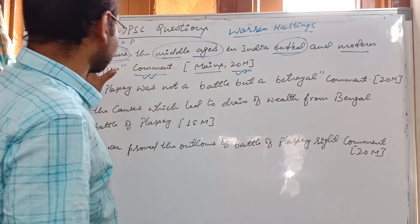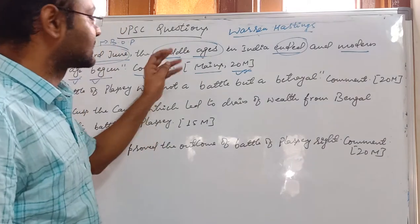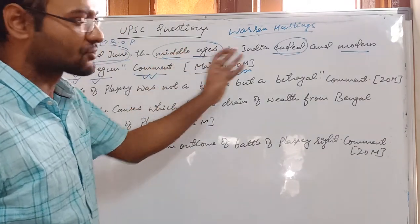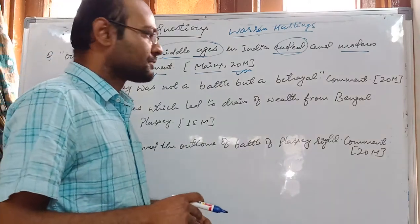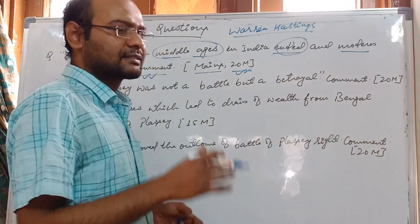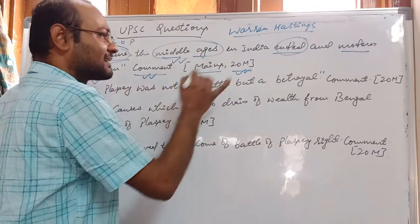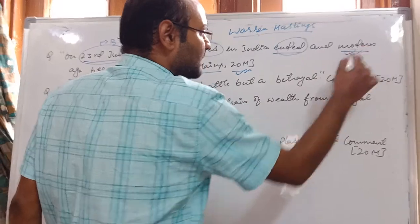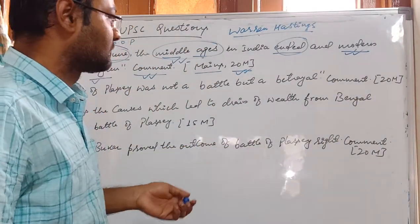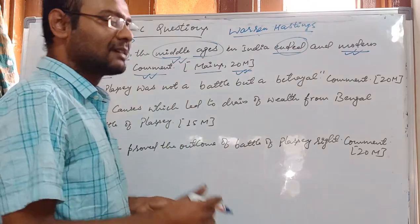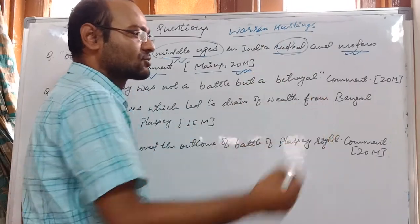The English became victorious in the battle, but the Middle Ages were not completely destroyed because social, religious, administrative, and political institutions were still based on medieval lines. However, it did begin the modern age, as the British acquired more and more territory after the Battle of Buxar, the Treaty of Allahabad, and then started modern institutions — which we will see when discussing Robert Clive and Warren Hastings.